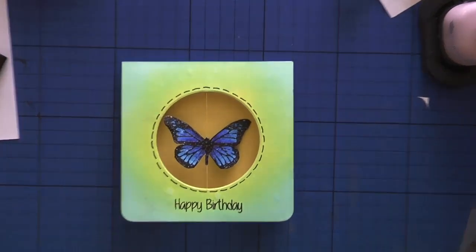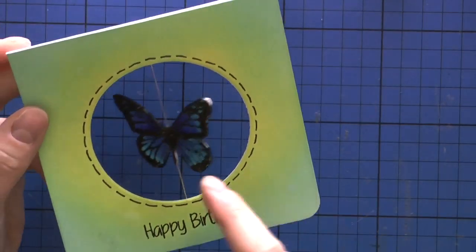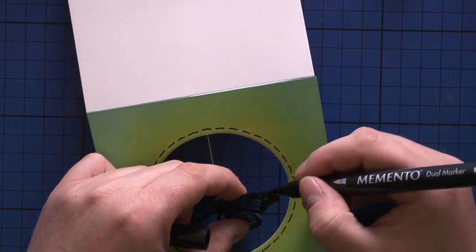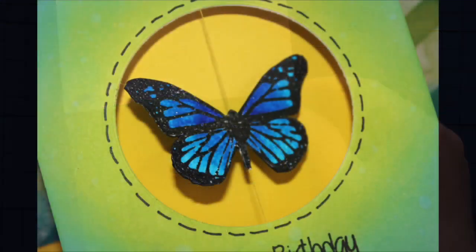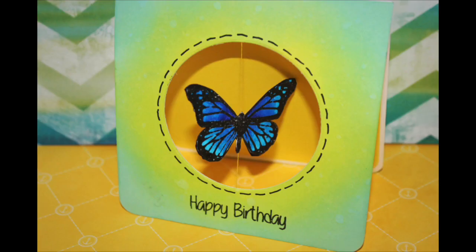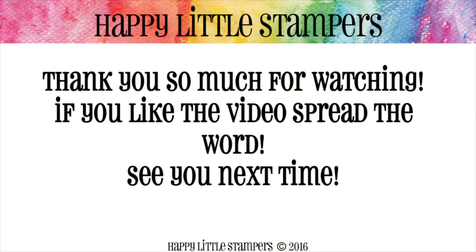Here's the finished card. I really love how it turned out. I like the yellow, blues, and greens together - I think it's a nice color combination. I really love the spinner card type and how the butterfly can just spin around in there, and the recipient gets a little interactive card. Thank you so much for watching. I hope you enjoyed it, and see you next time. Bye!